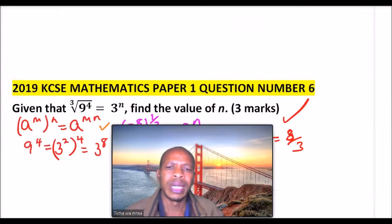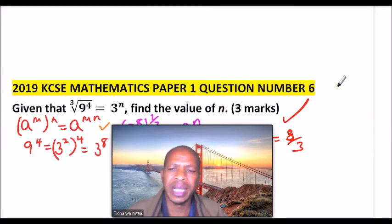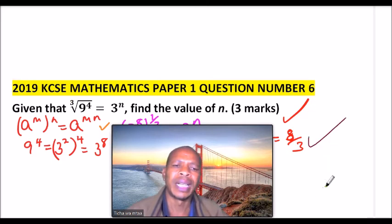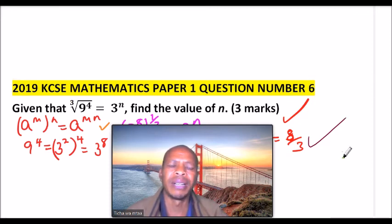We have question number six. This is from indices which you also covered in form two. You should be able to work out that and get 8 over 3. I want to give you an opportunity to do that and then you can click on the link below and you'll be able to get the video of this.